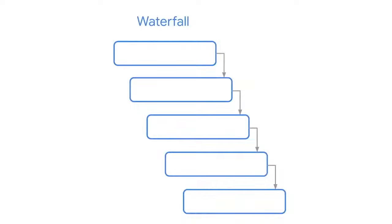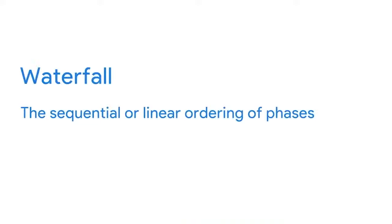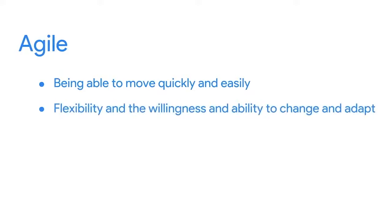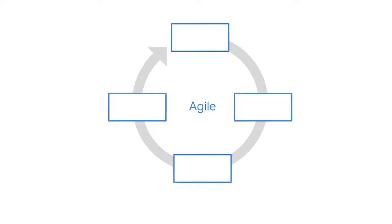To quickly review: Waterfall is a popular project management methodology that refers to the sequential or linear ordering of phases. You complete one phase at a time, not proceeding to the next until it is done, then you move down the line like a waterfall starting at the top of a mountain and traveling to the bottom. The term Agile refers to being able to move quickly and easily. It also refers to flexibility and the willingness and ability to change and adapt. Projects that adopt Agile project management take an iterative approach, which means the project processes are repeated, often many times during the life cycle of the project.